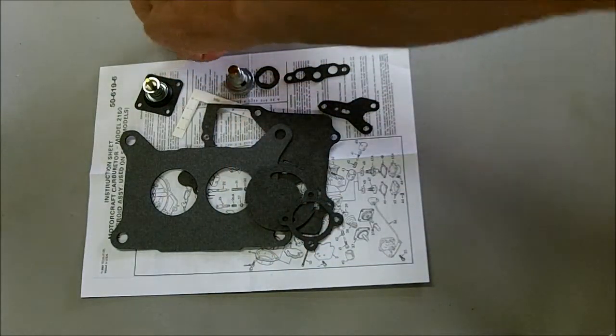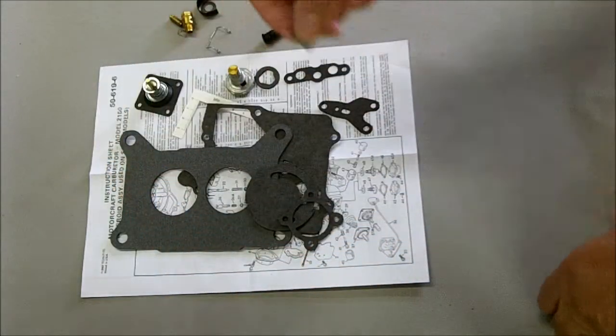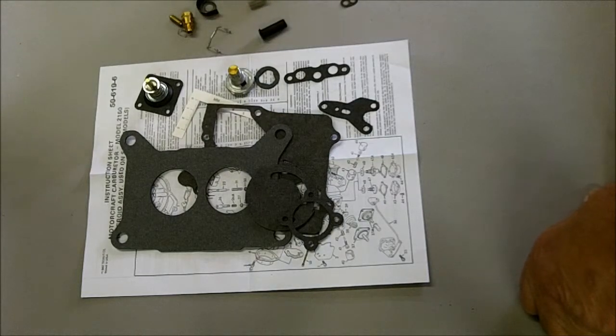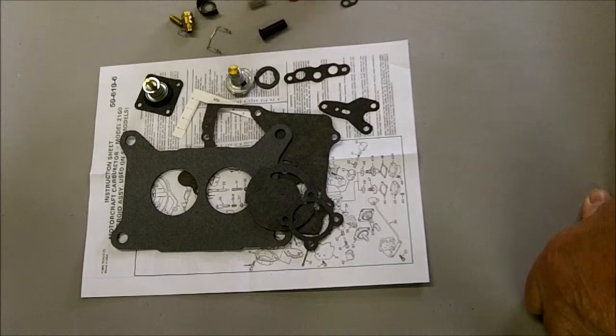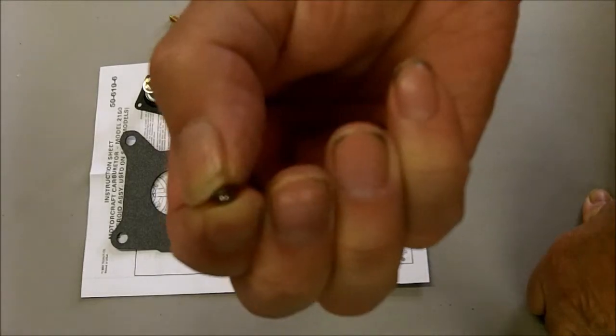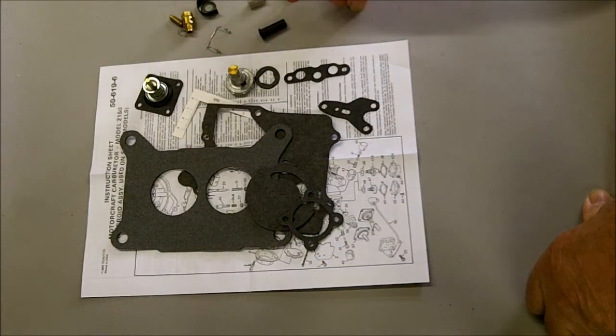Your little filter and here's your check valve, umbrella type check ball, and this is for your choke housing.